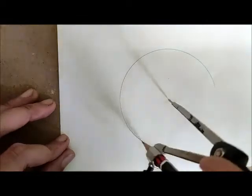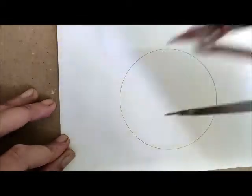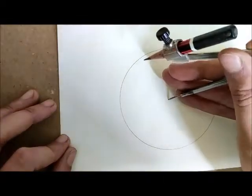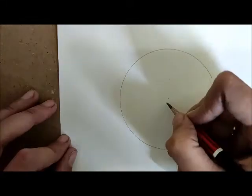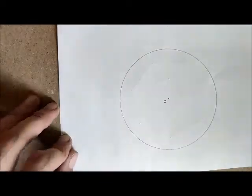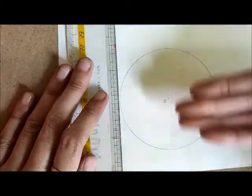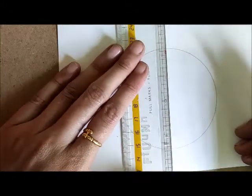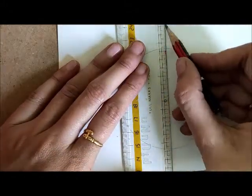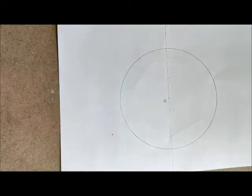Mark the center as O, and now we are going to divide the circle in two equal parts by joining the two points on our circle. The line must pass through the center of the circle so it becomes the diameter.